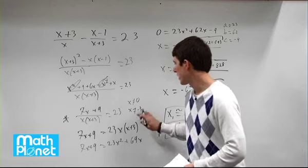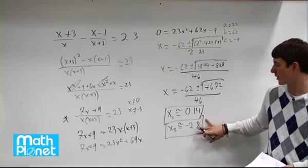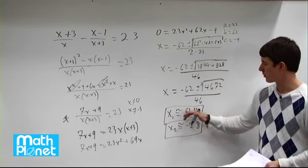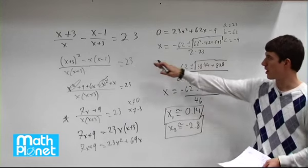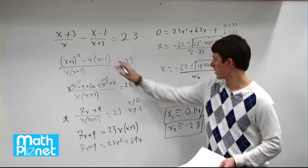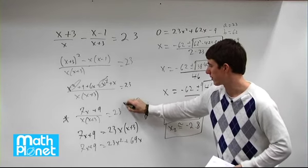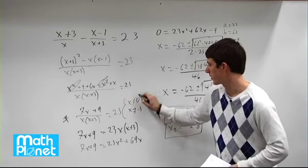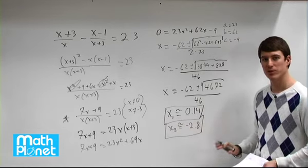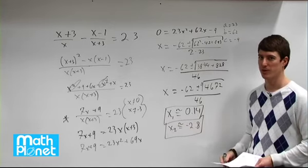So x cannot be 0. x cannot be negative 3. However, that is not either of our final answers, so it doesn't matter. We were able to solve our original equation here. Neither of these are these values here, so it's fine. We're not too concerned about these. We have two answers and they're both correct. And that's the final answers.